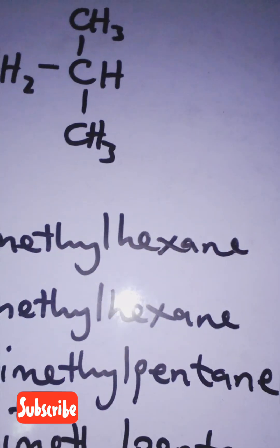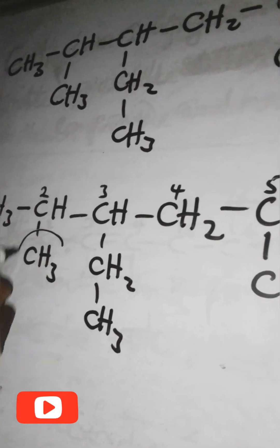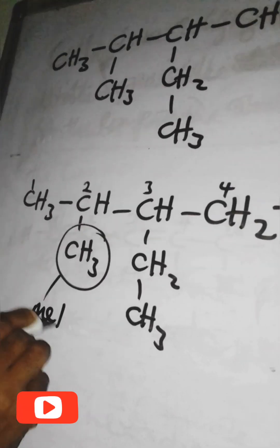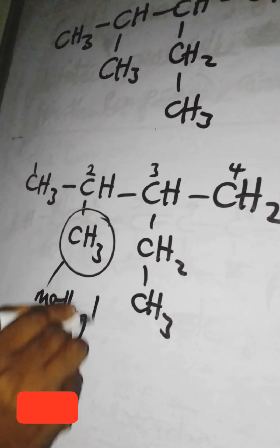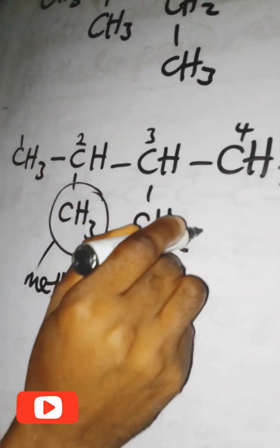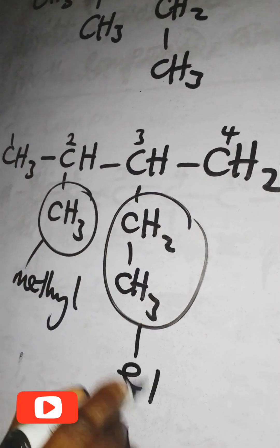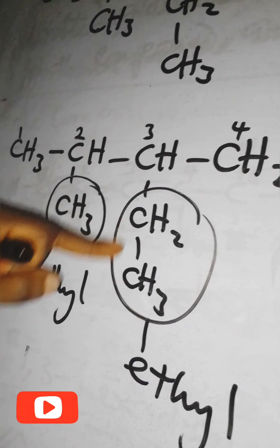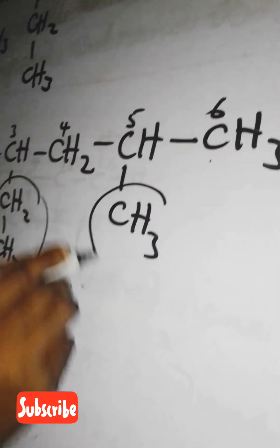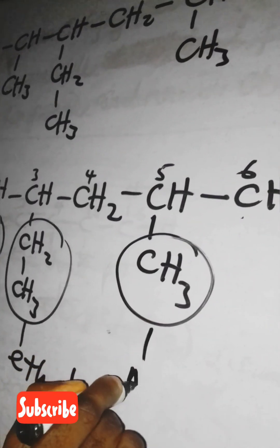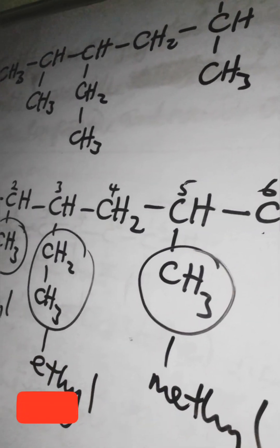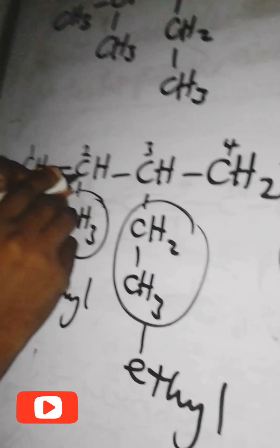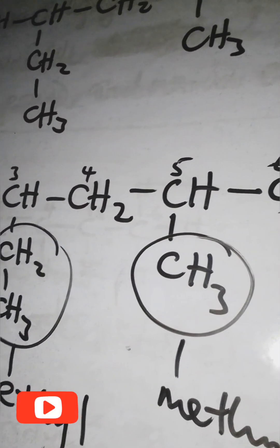That means the answer must be either A or B. At the second carbon you have a methyl group; at the third carbon you have an ethyl group — two carbon atoms. At the fifth carbon position you have another methyl group.